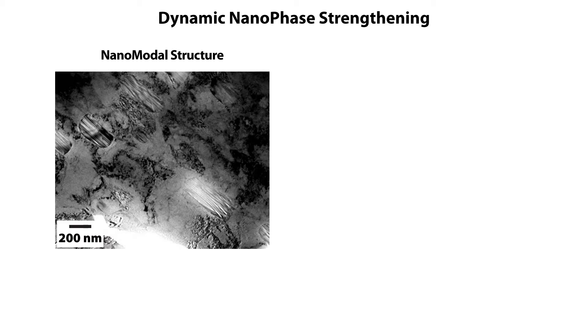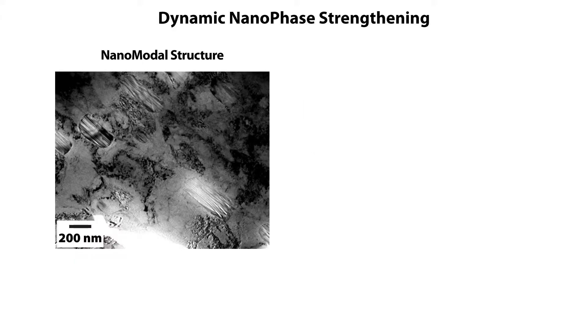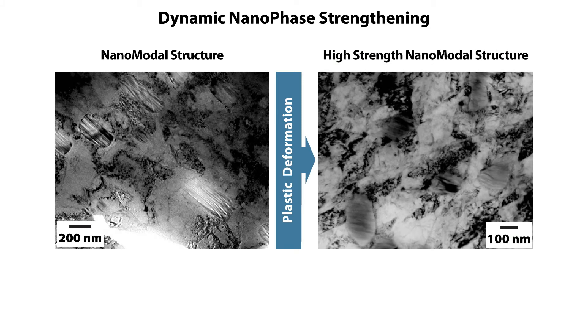We start with our nanomodal structure — this is what we'd sell, for instance, in a coil of sheet. This structure will then be transformed into parts by various cold deformation processes. When the structure is cold deformed, the material transforms again, and we have a process that occurs after yielding where we form very high fractions of nanoscale phases. That's called dynamic nanophage strengthening. It gives us very high strain hardening response and also results in very high fractions of usable ductility, which is very important for cold deformation.